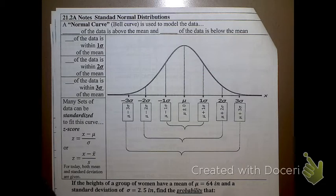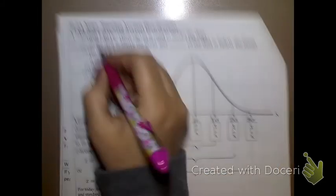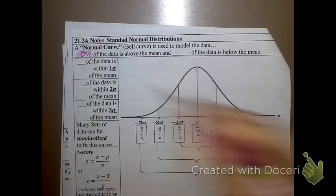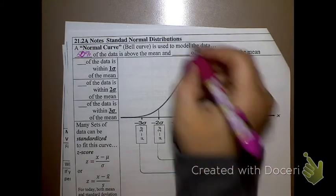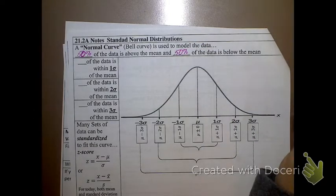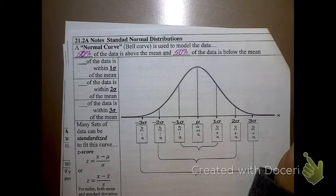It is used to model data. One thing that's great is 50% of the data is above the mean, and 50% of the data is below the mean. Does that always happen, that 50% of the data is above the mean? No, but in a bell curve it does.